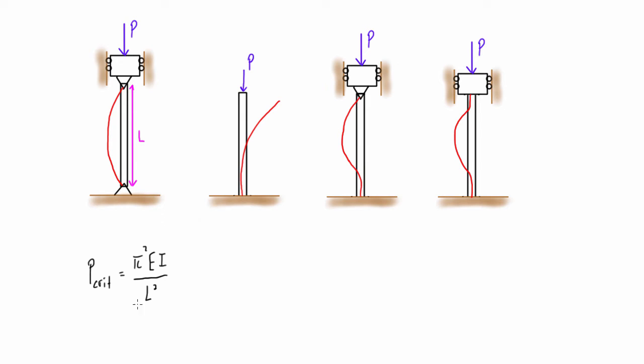And the way that we account for these is we have to talk about effective length rather than just the actual length of the column. So what we should really be writing this equation as is with a subscript E here saying this is the effective length. Now in the case of the pin to pin connection, our length is going to be equal to the effective length, and that's why this expression doesn't change whether we're talking about effective length or just length.